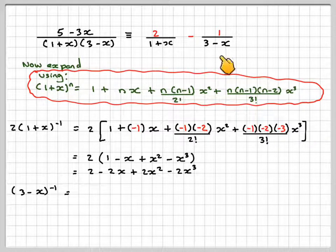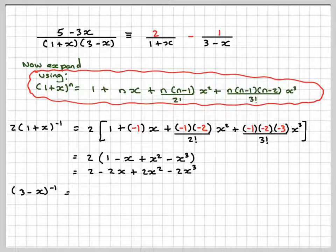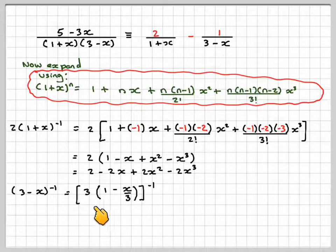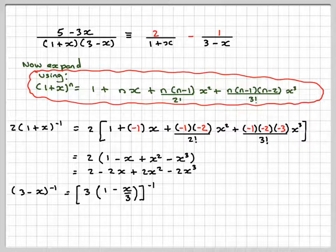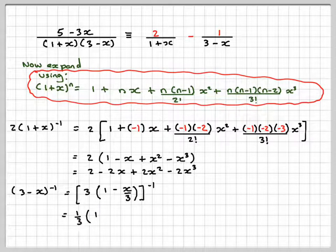Over to this one, this will be 3 minus x to the minus 1, so we need to make this 1 in the front. So we do that by taking out a 3, but we keep it within the bracket. 1 minus x over 3 to the power of minus 1. So we're going to have 1 third, because 3 to the minus 1 is 1 third of 1.